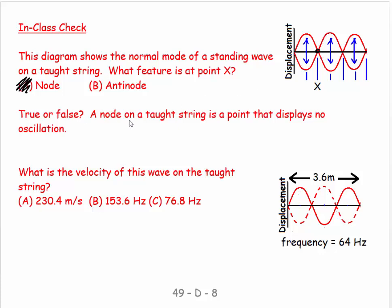True or false, a node on a taut string is a point that displays no oscillation. And that's true. That piece of material is stationary at these nodes.